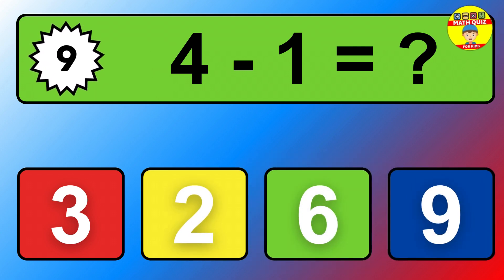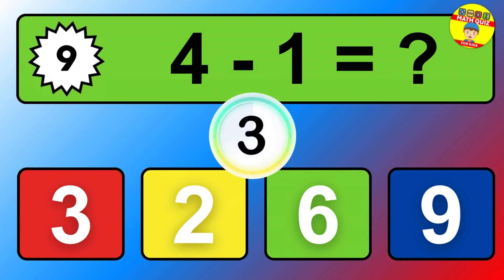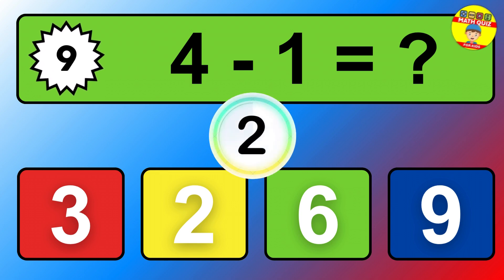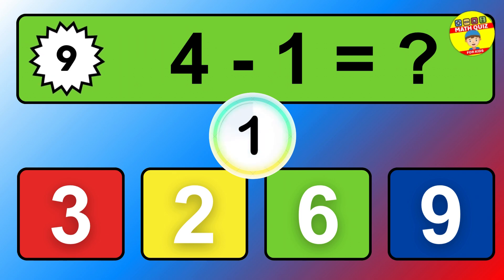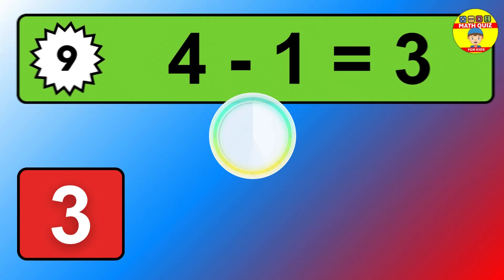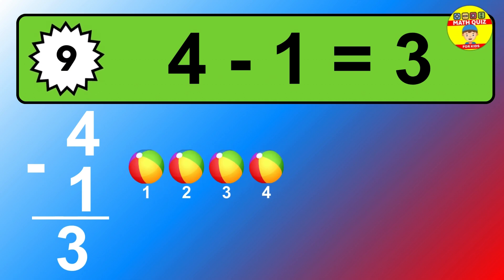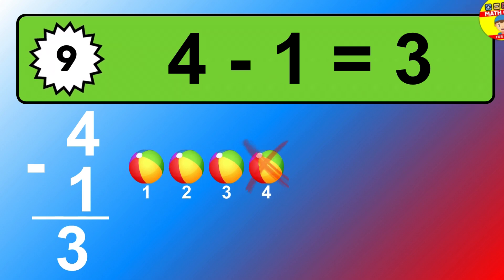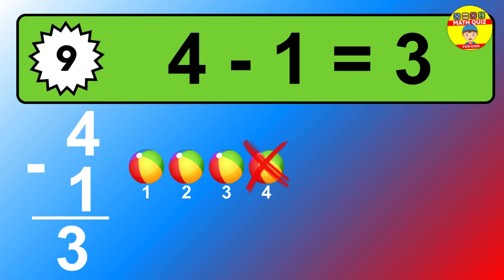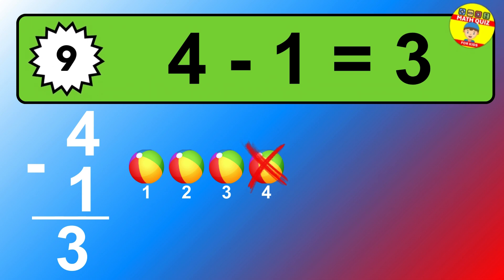Question nine: four minus one equals what? So the answer is four minus one is three. Let's count it. One, two, three.